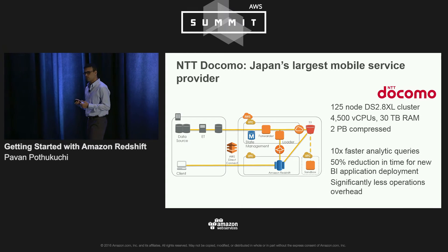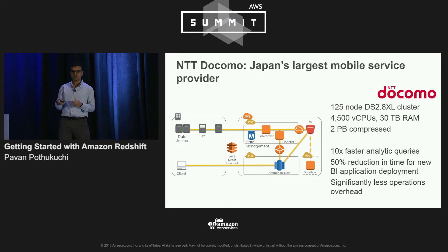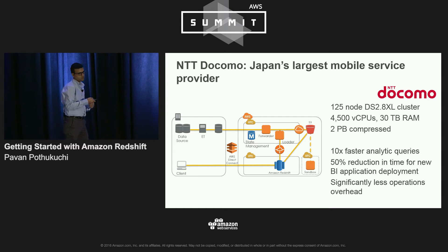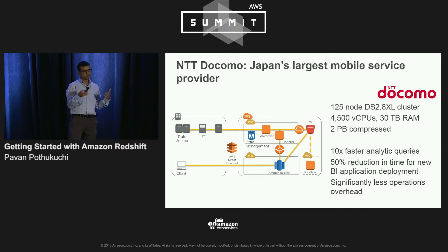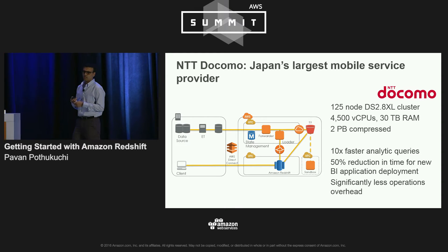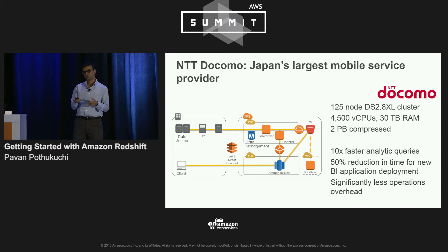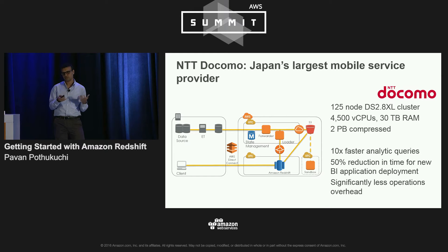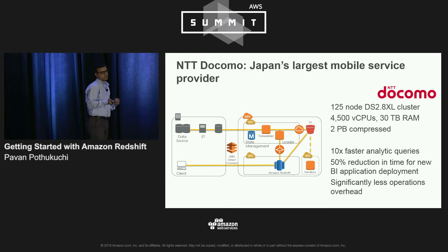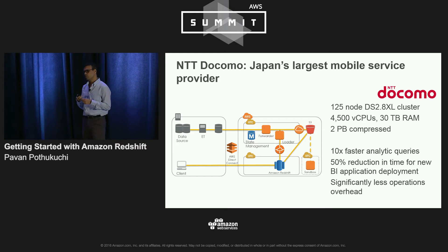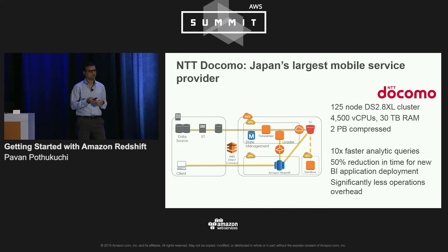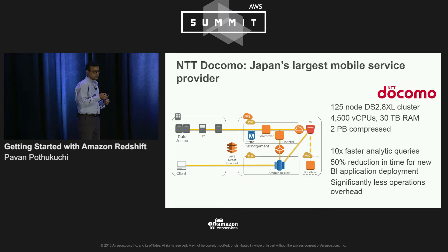They migrated to Redshift about a year ago. Their data is generated on-premises, transferred via a Direct Connect line to AWS, processed and moved into S3, and then loaded into Redshift. It's a very large cluster — 125 node DS2 8XL instances, 4,000 vCPUs, and 30 terabytes of RAM. After migration, many of their analytics queries improved by over 10x, they are able to roll out new BI applications very quickly, and they have significantly less operational overhead.